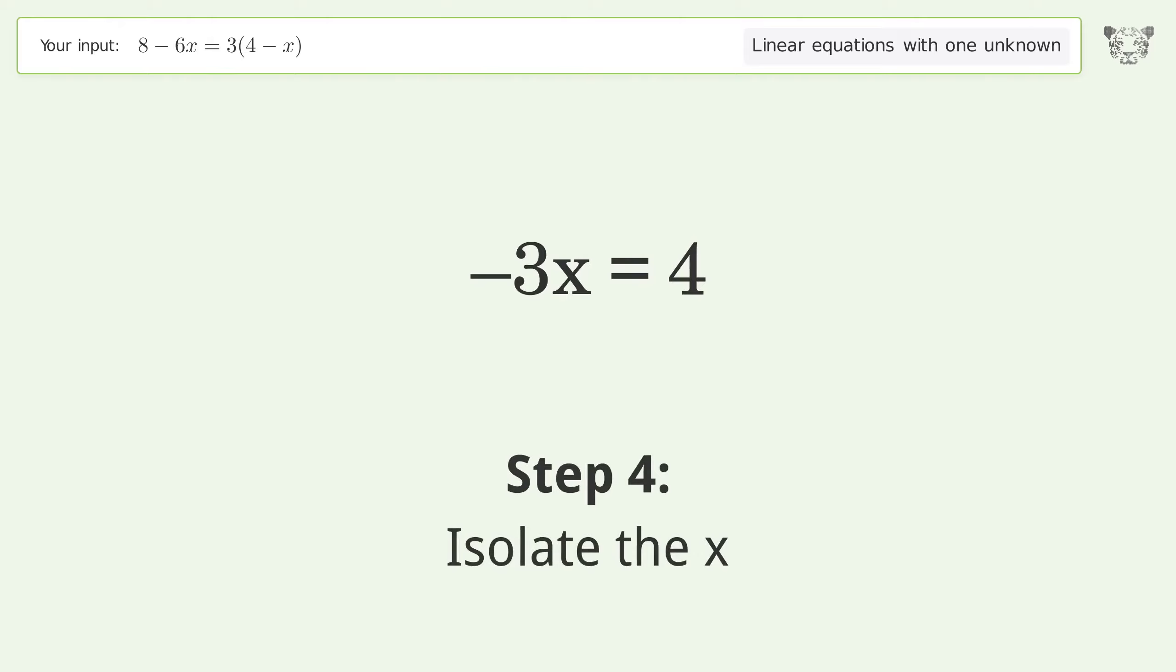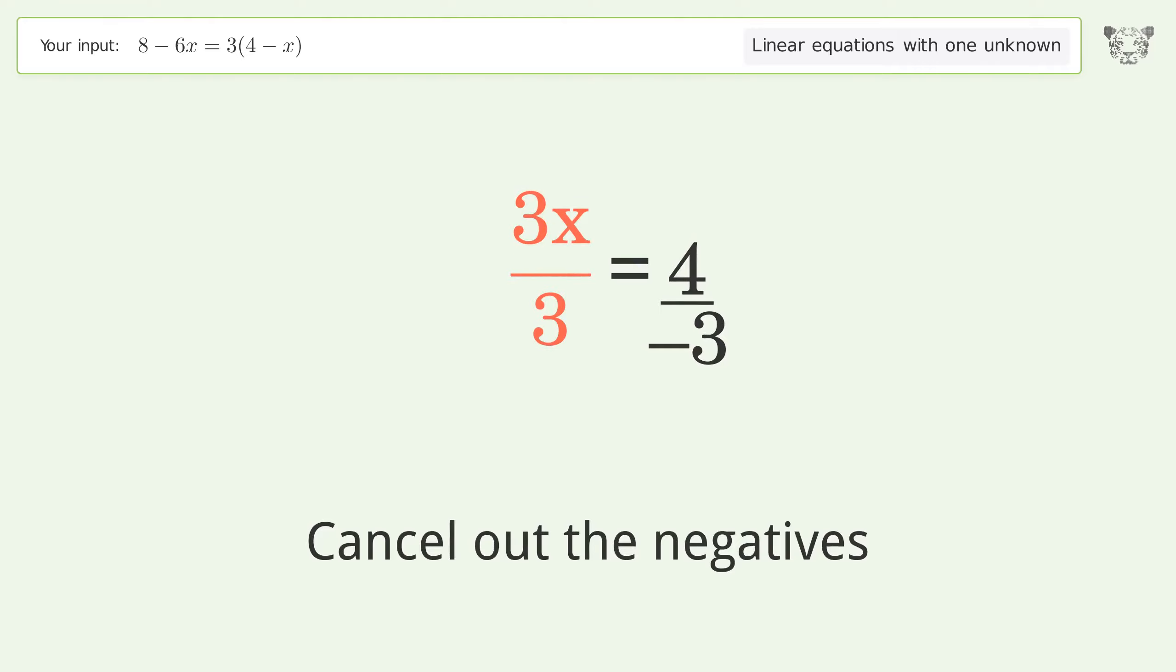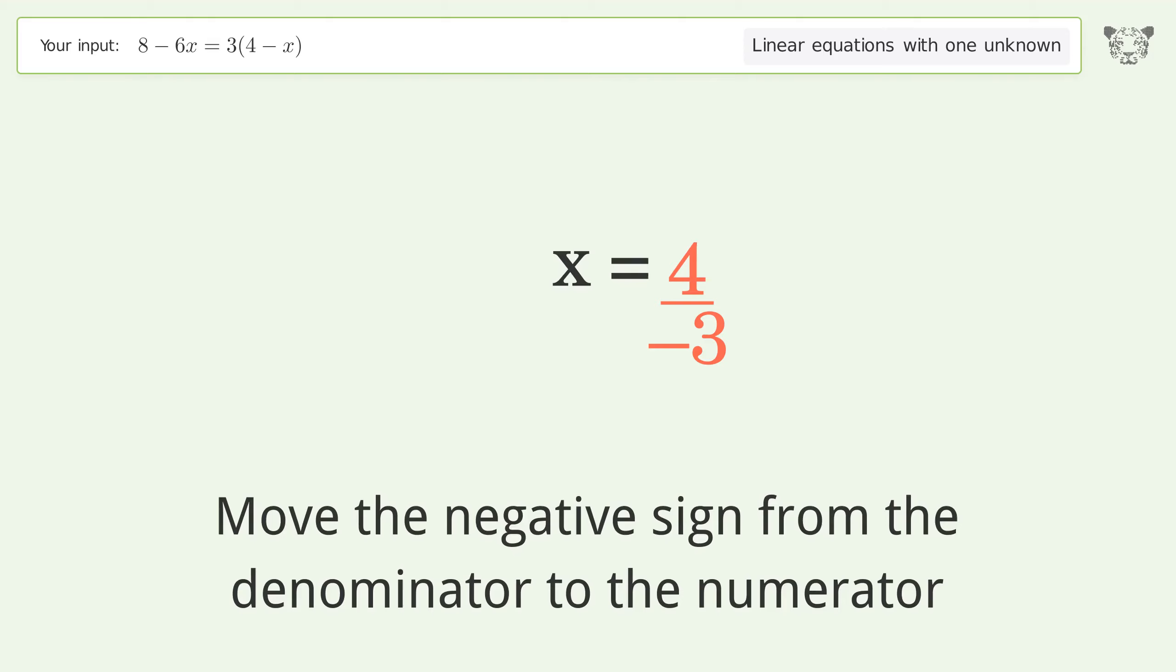Isolate the x. Divide both sides by negative 3. Cancel out the negatives. Simplify the fraction. Move the negative sign from the denominator to the numerator.